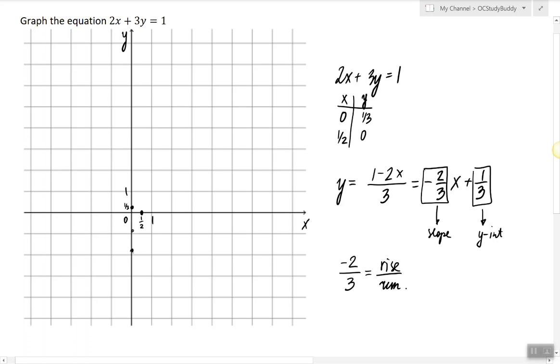So negative one, negative two, and three to the right. So this would be the next point. And we can repeat this pattern again and again.